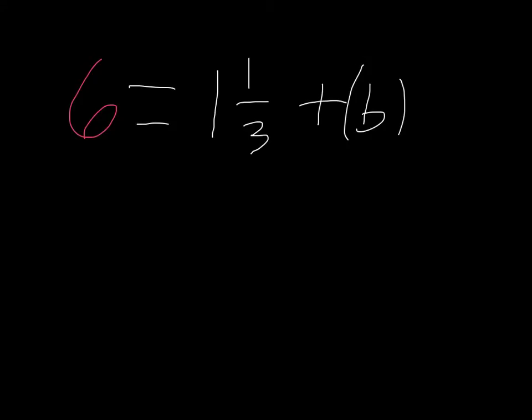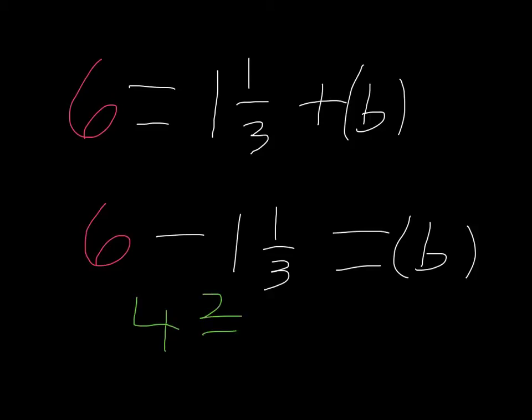So, we need to find out what b is. So, to do this, we can do 6 minus 1 and 1 third equals b. And 6 minus 1 and 1 third is equal to 4 and 2 thirds.